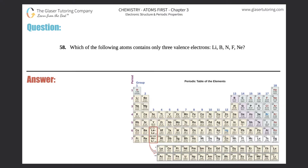Question 58: which of the following atoms contains only three valence electrons — Li, B, N, F, or Ne? Remember, valence electrons are the outermost electrons found in the last shell for a specific atom or element. The shell refers to the n number, so it's the last shell.